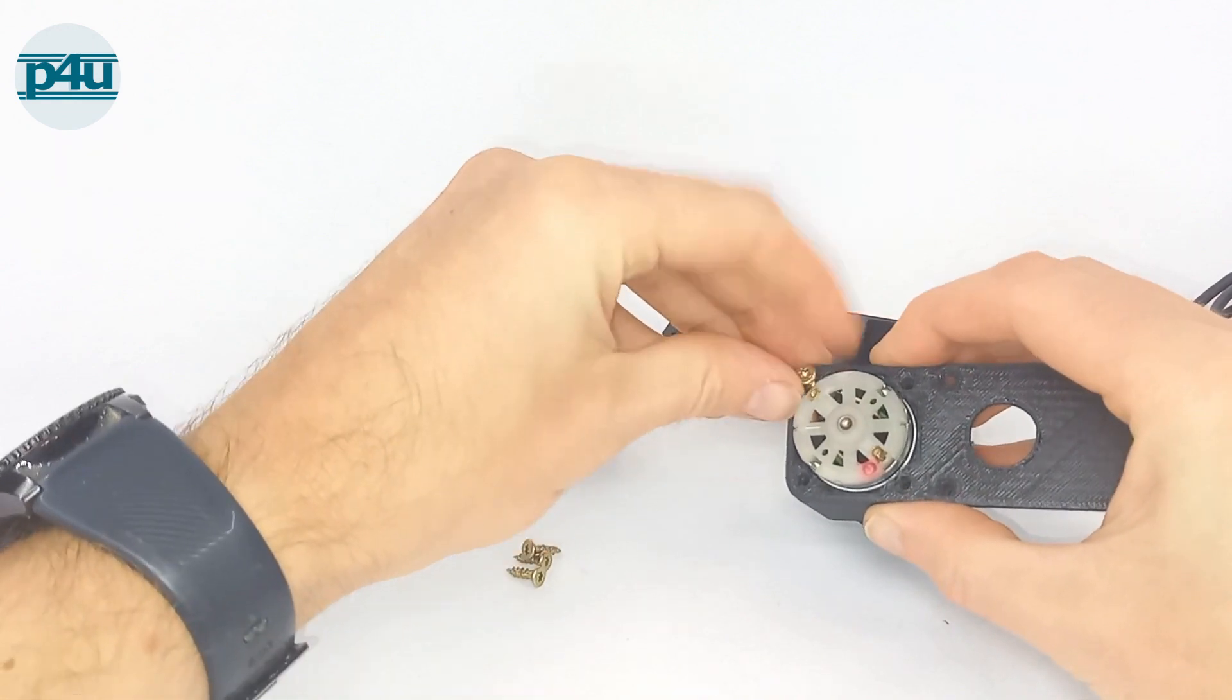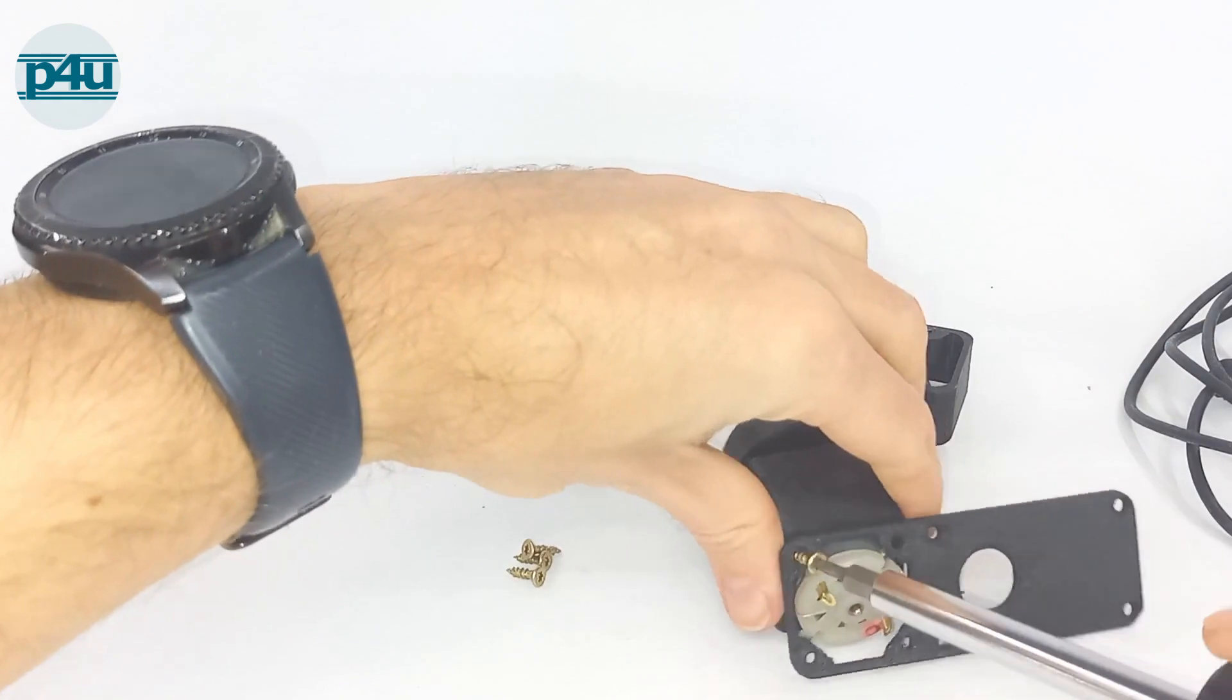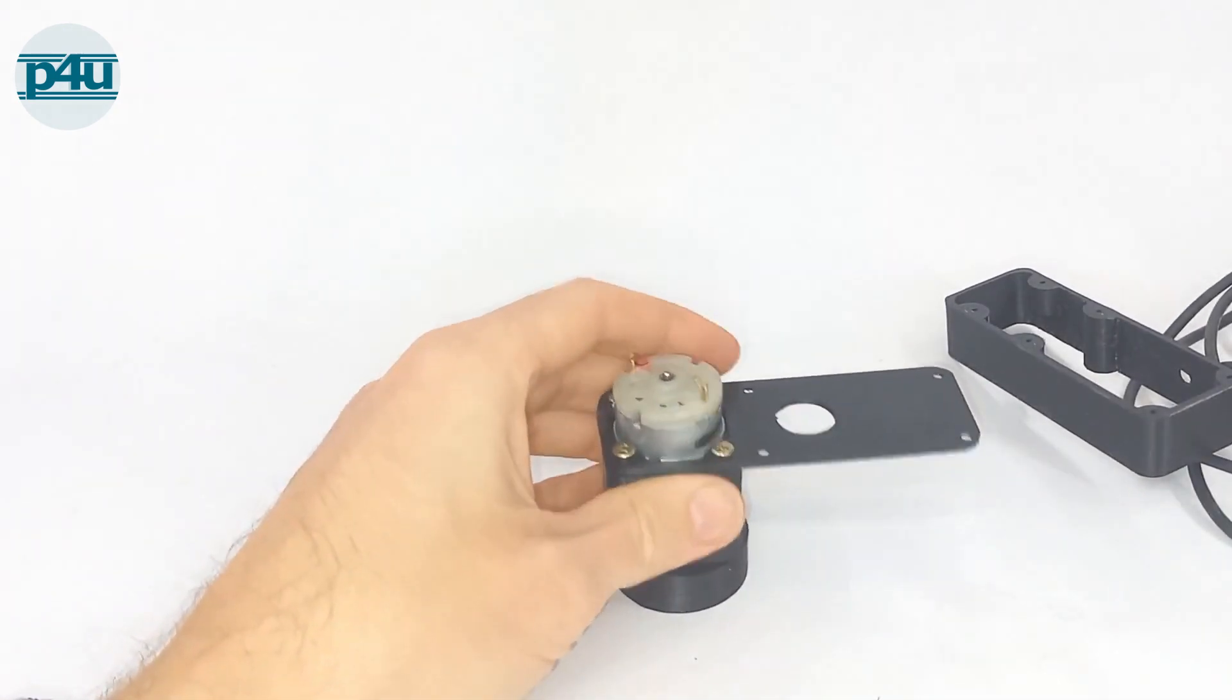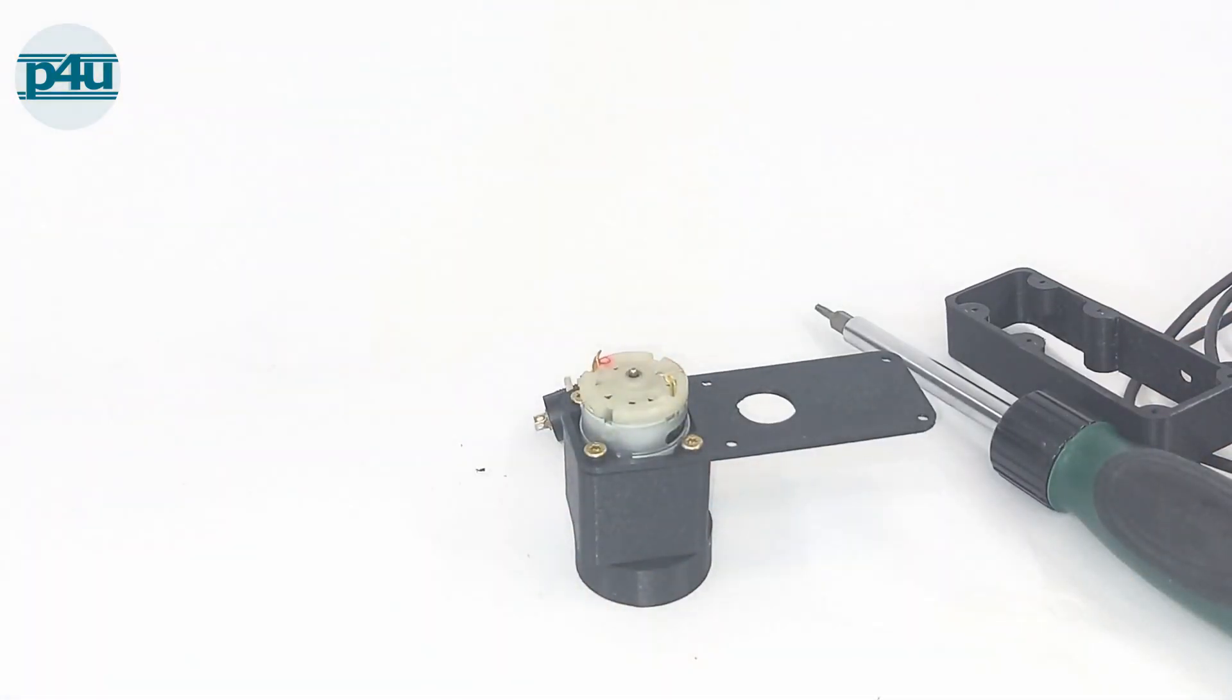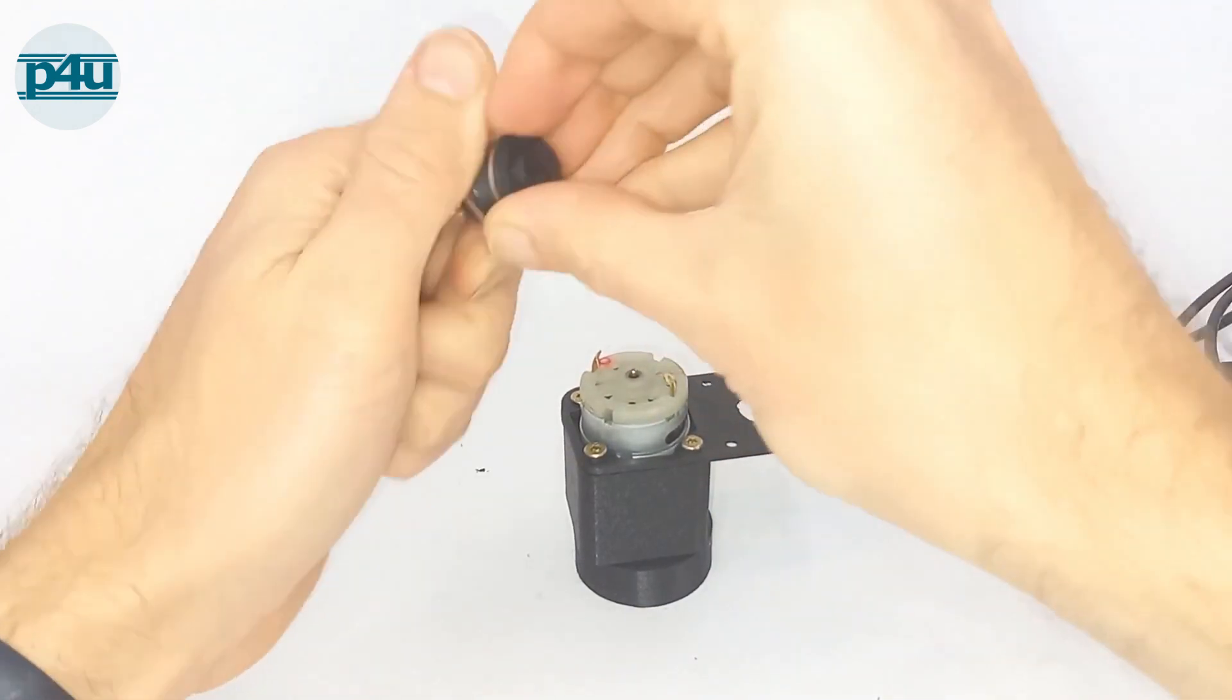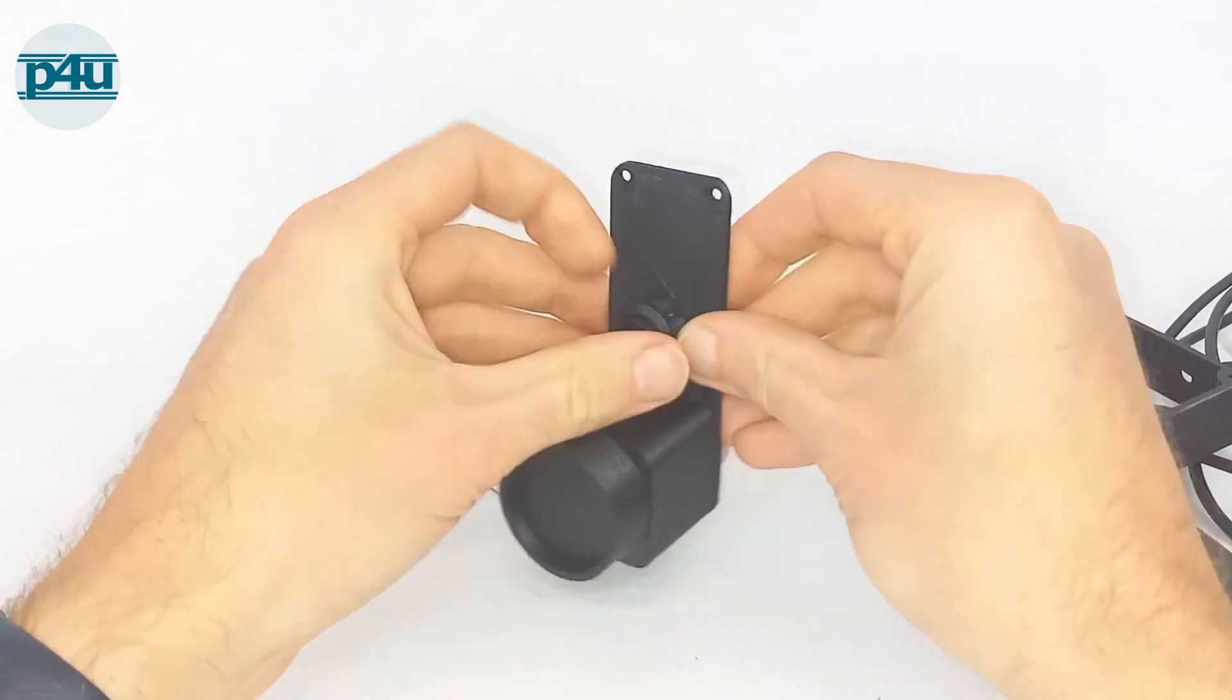For the engine you have to take care about a few parameters. For example it has to turn with 5V and the current is limited by the power bank you use. Also you need an engine which speed is high enough to shake the paint. The parameters we use you find in the description.